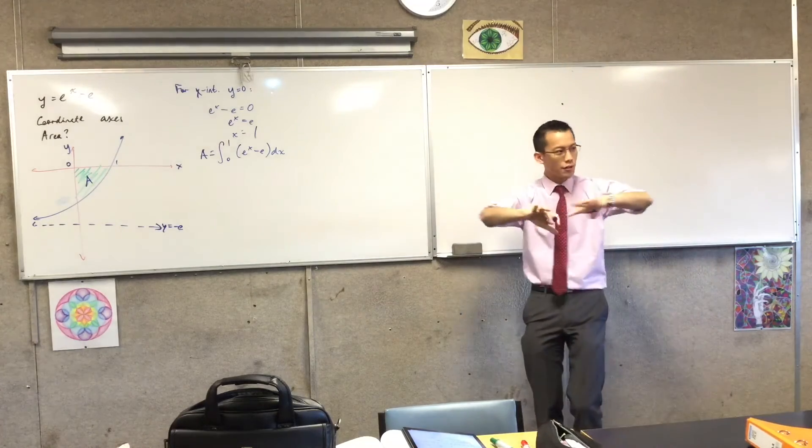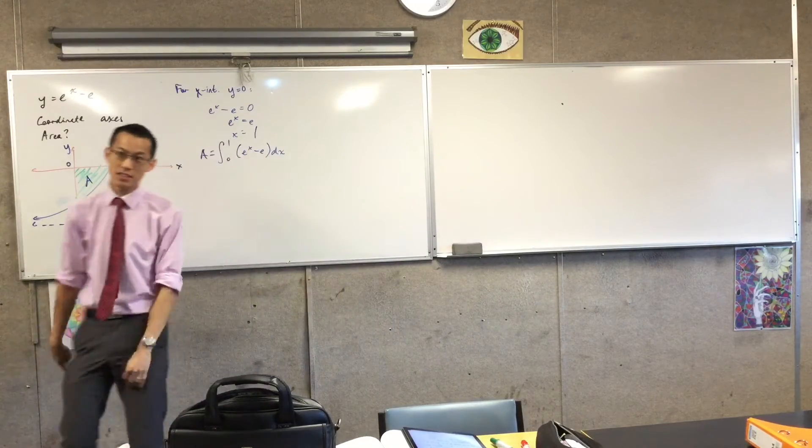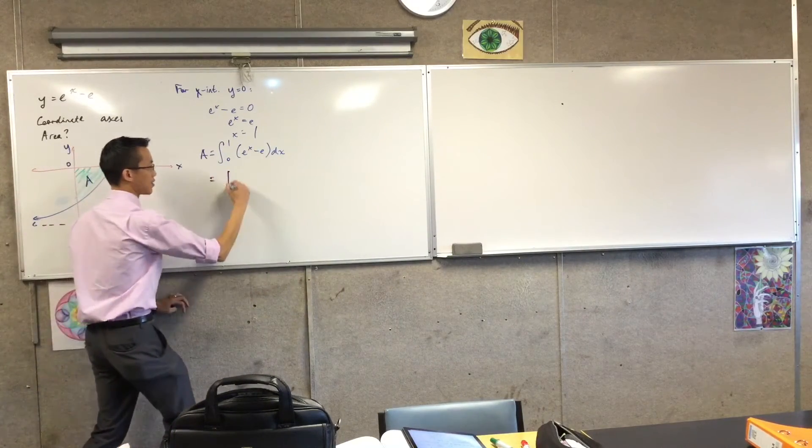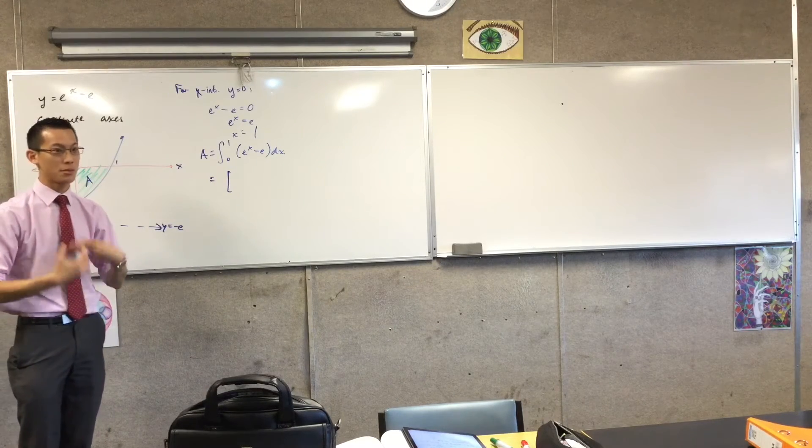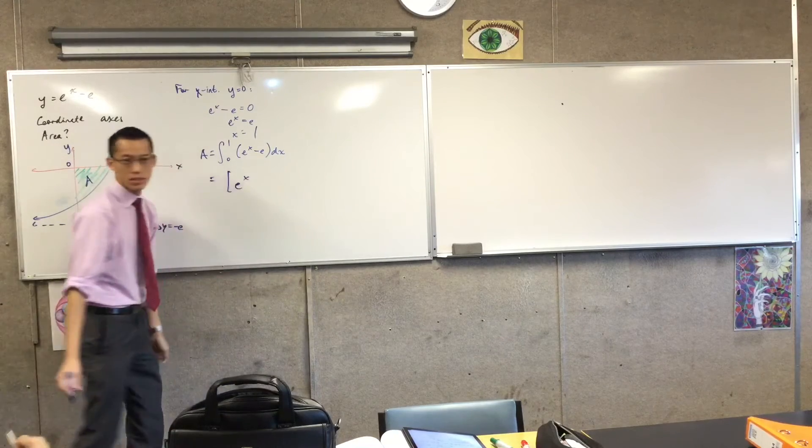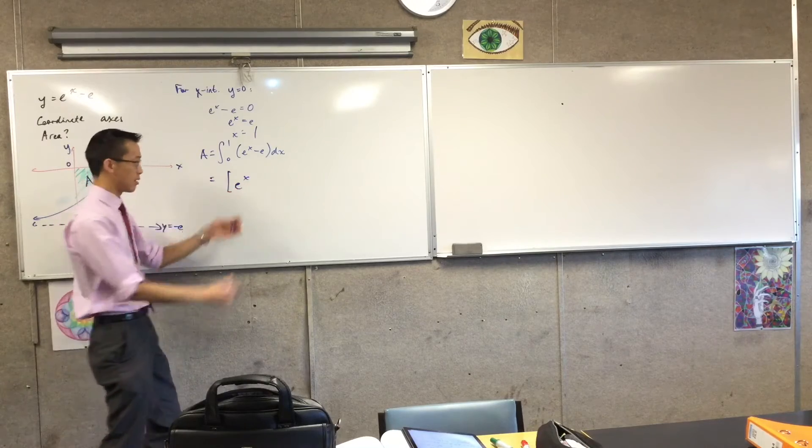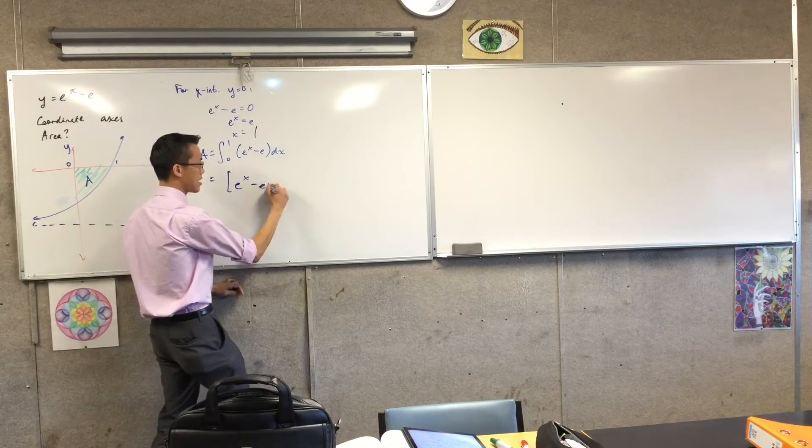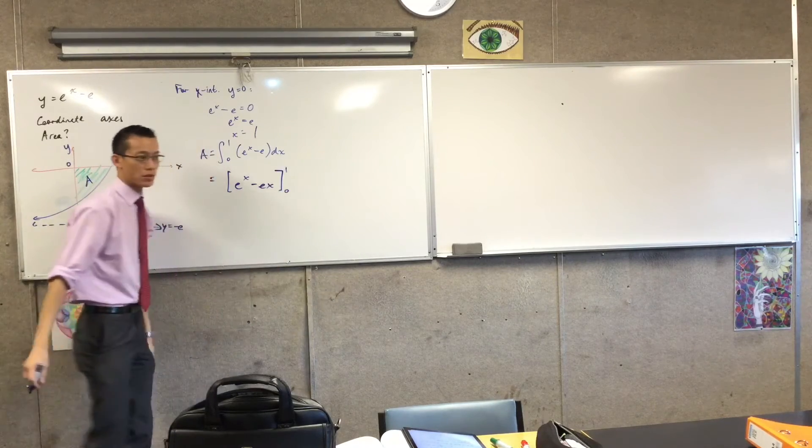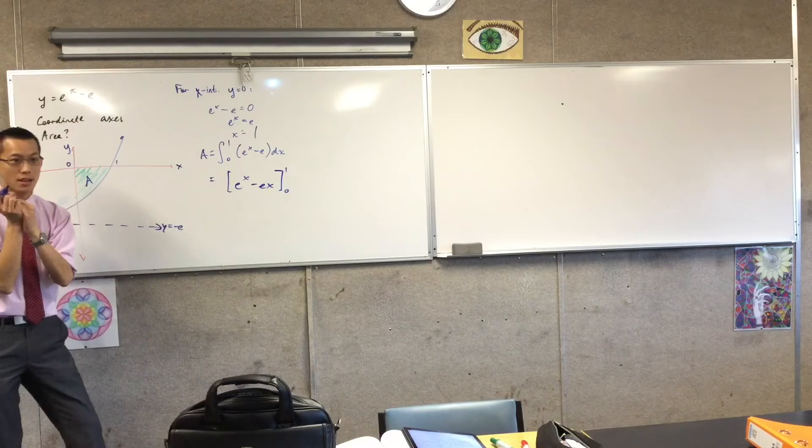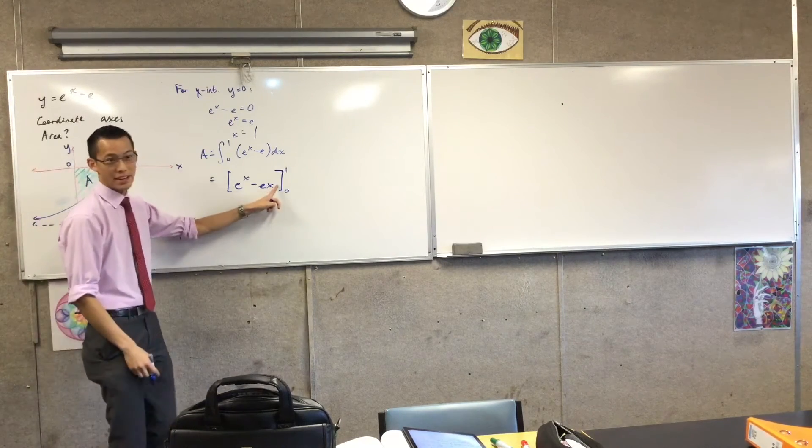So we've just done all of the groundwork to say, okay, now I know what I'm working with and now I just focus on the process of actually integrating. So I've got my square bracket. We've just labored the fact that e to the x, when you integrate it, becomes e to the x. What does negative e turn into? Minus e. Yeah, it's just a constant. So it'll be minus ex. It's just the straight line that you integrate. And then you're integrating from 0 to 1. We don't need to worry about any constants because it's a definite integral.